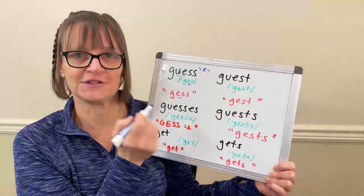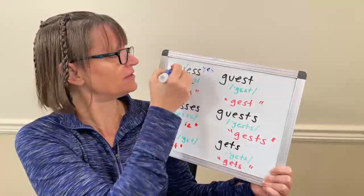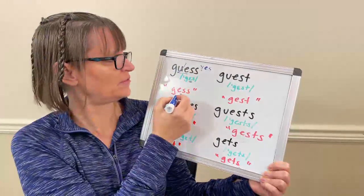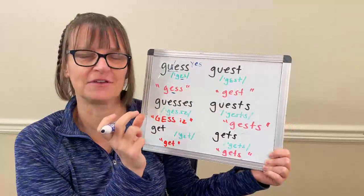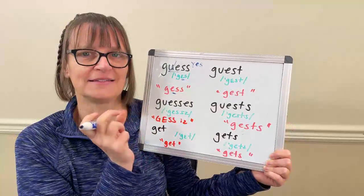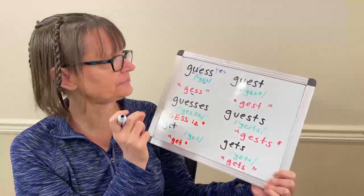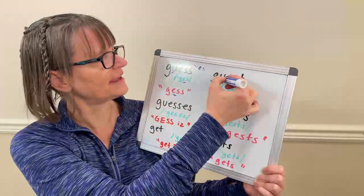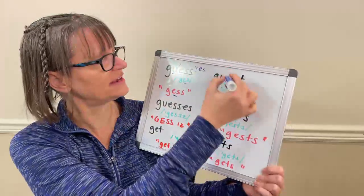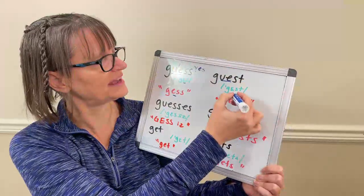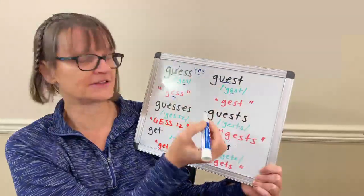So the first thing to do is visualize it without the U if that's helpful for you, and just think about it as the three sounds: guess. Same thing for 'guest' — we also don't say anything for that U sound. We just have the EH vowel like in 'yes.'